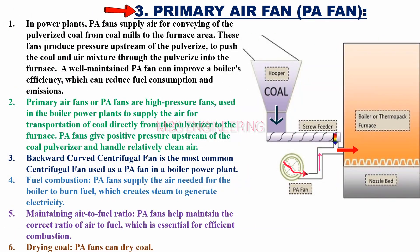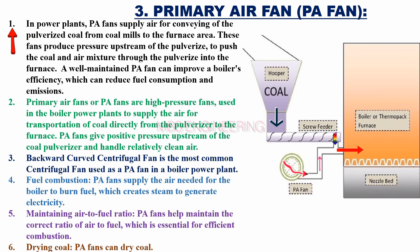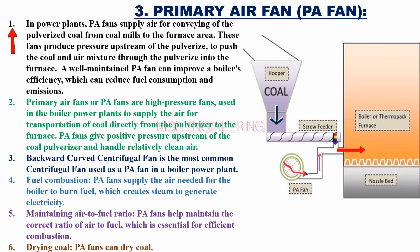Let's move on to the PA Fan. In power plants, PA fans supply air for conveying the pulverized coal from coal mills to the furnace area. These fans produce pressure upstream of the pulverizer to push the coal and air mixture through the pulverizer into the furnace. A well-maintained PA fan can improve a boiler's efficiency, which can reduce fuel consumption and emissions.